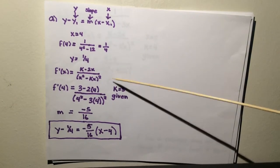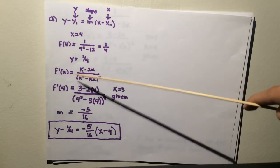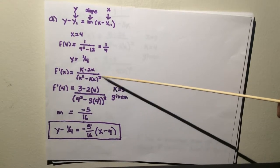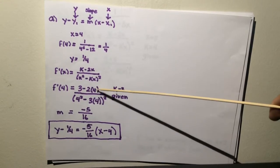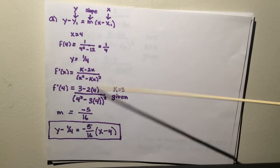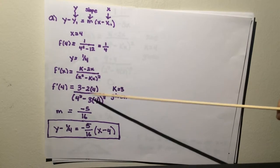Next, you need to find your slope. f prime, and this formula is already given to you. f prime of x equals k minus 2x over x squared minus kx squared. You plug in 4, so x equals 4 and k equals 3, which is already given. Once you solve for that, your slope is negative 5 over 16.